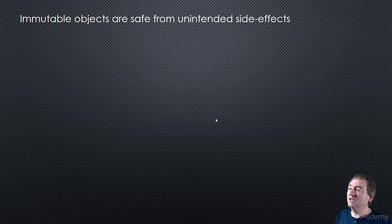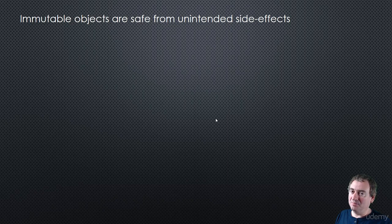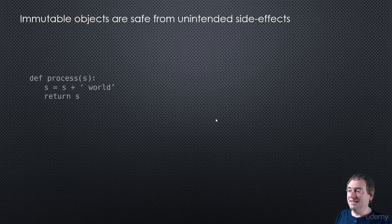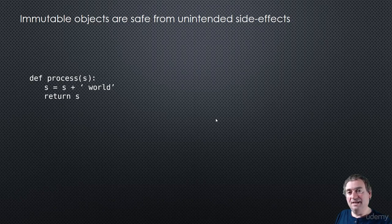So let's take a look at why immutable objects are generally safe from unintended side effects. By side effects, I mean that if we call a function with our variable, that function may or may not alter the value of our variable. If we have immutable objects, we have a general amount of safety.